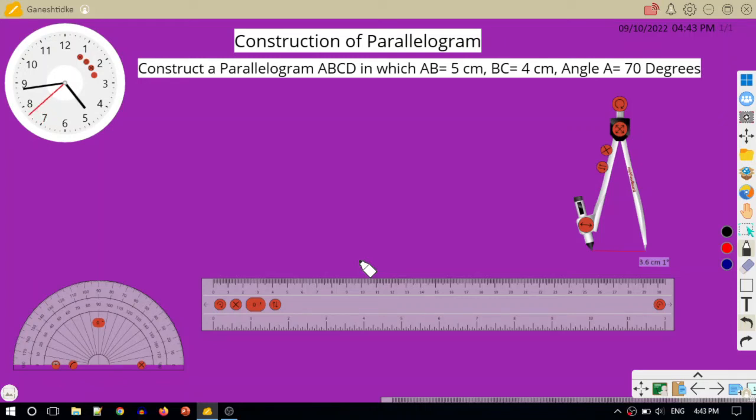Hello students. In our previous video, we have seen how to construct a square. So in today's video, we are going to construct a special type of quadrilateral, that is parallelogram, having given adjacent sides and included angle.